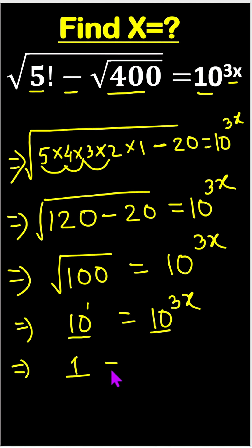So we can write 1 equals 3x. Therefore, x equals 1 divided by 3. Very simple, and this is our answer. Thank you.